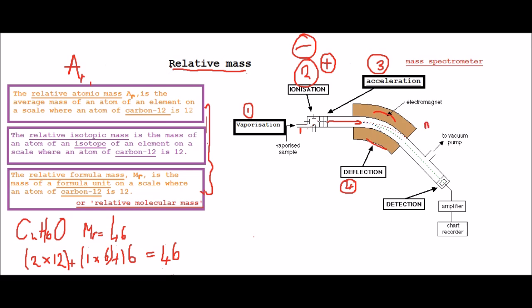So mass-charge ratio is shown as M/Z ratio. And the machine can be set so that it can detect a particular M/Z ratio, or it can detect different ones, different M/Z ratios.